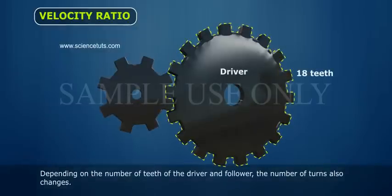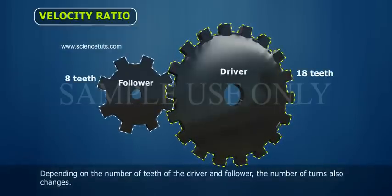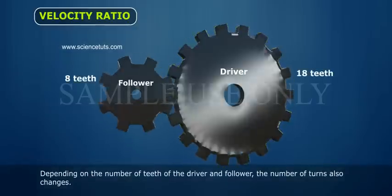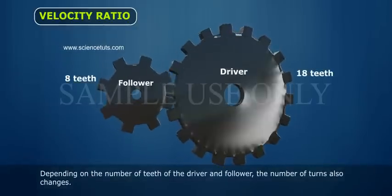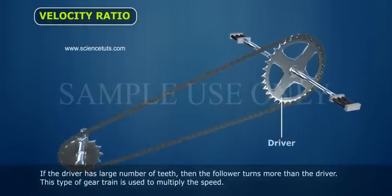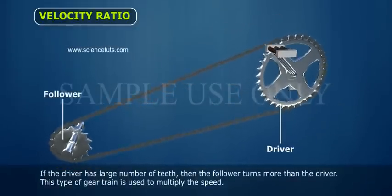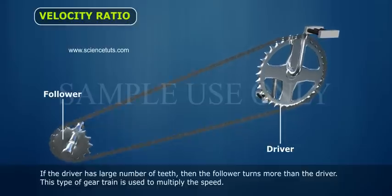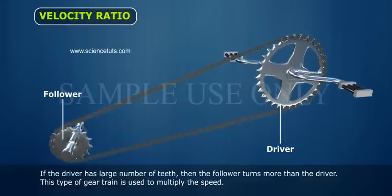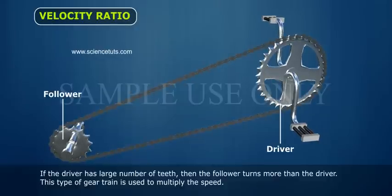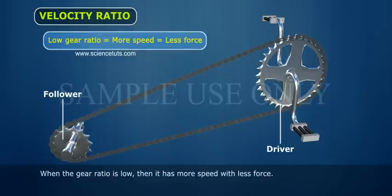Depending on the number of teeth of the driver and follower, the number of turns also changes. If the driver has a large number of teeth, then the follower turns more than the driver. This type of gear train is used to multiply the speed. When the gear ratio is low, then it has more speed with less force.